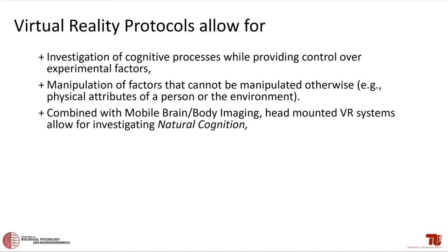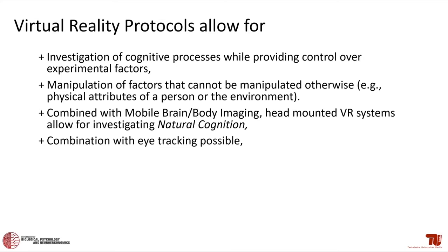Combined with mobile brain-body imaging, head-mounted VR systems allow for investigating natural cognition — maintaining experimental control while still allowing active behavior and even mid- to large-scale movement depending on your lab setup. In the future, eye-tracking will likely be standard in these systems; several are already on the market. For EEG research, this provides valuable additional analysis — tracking fixation-based activity and what participants look at alongside brain recordings.